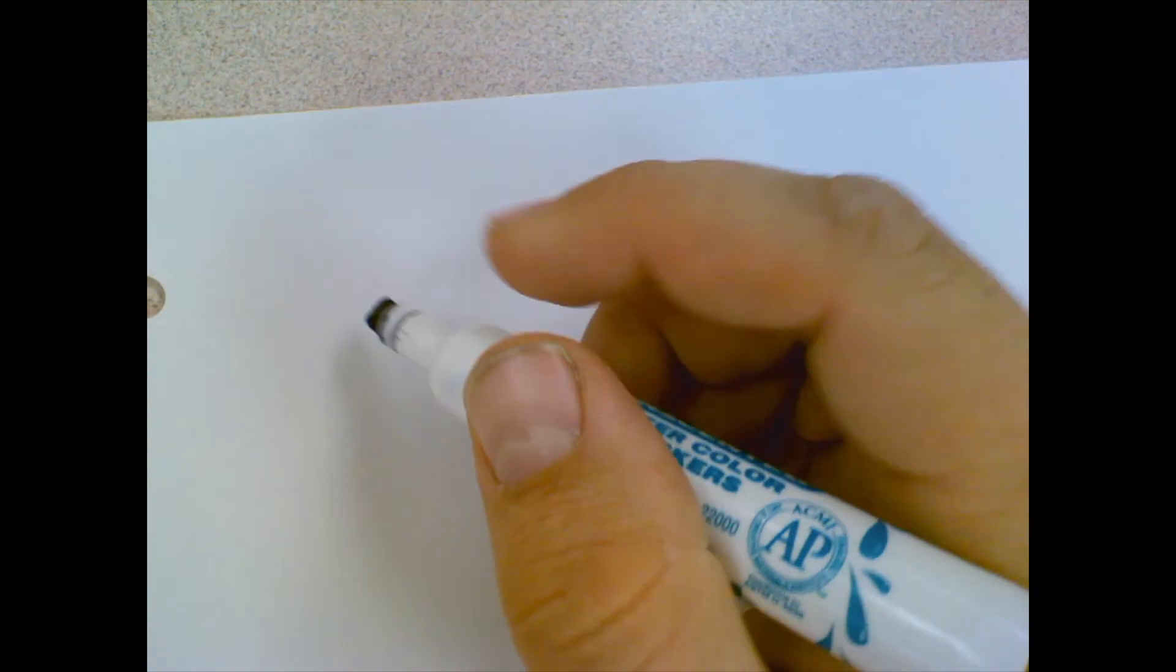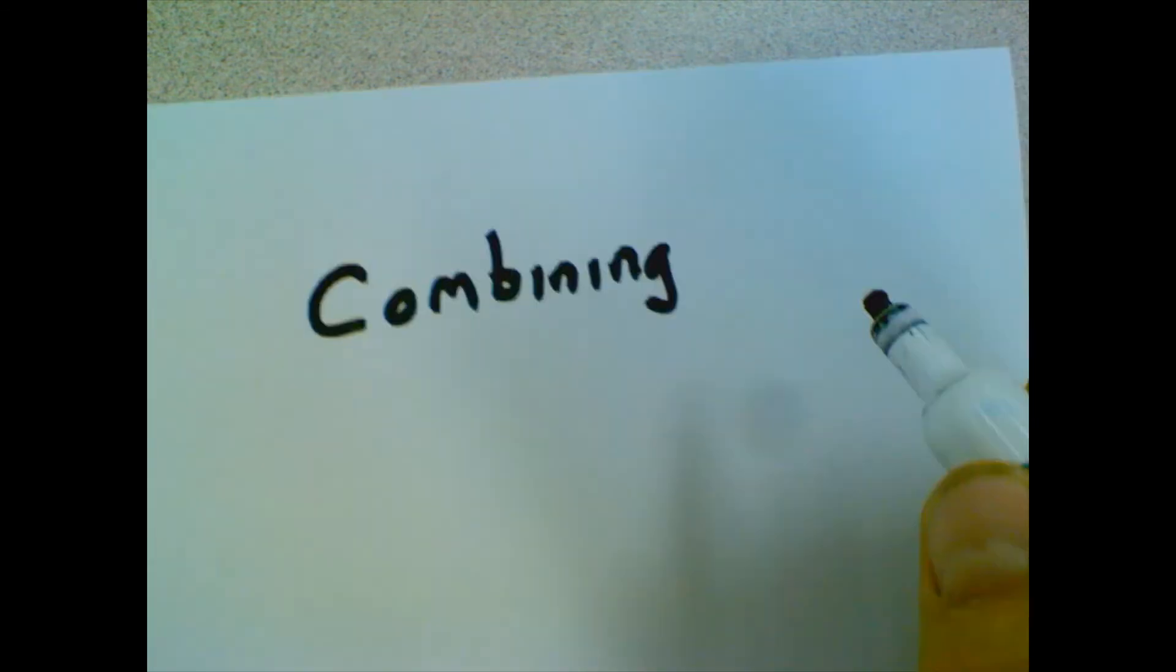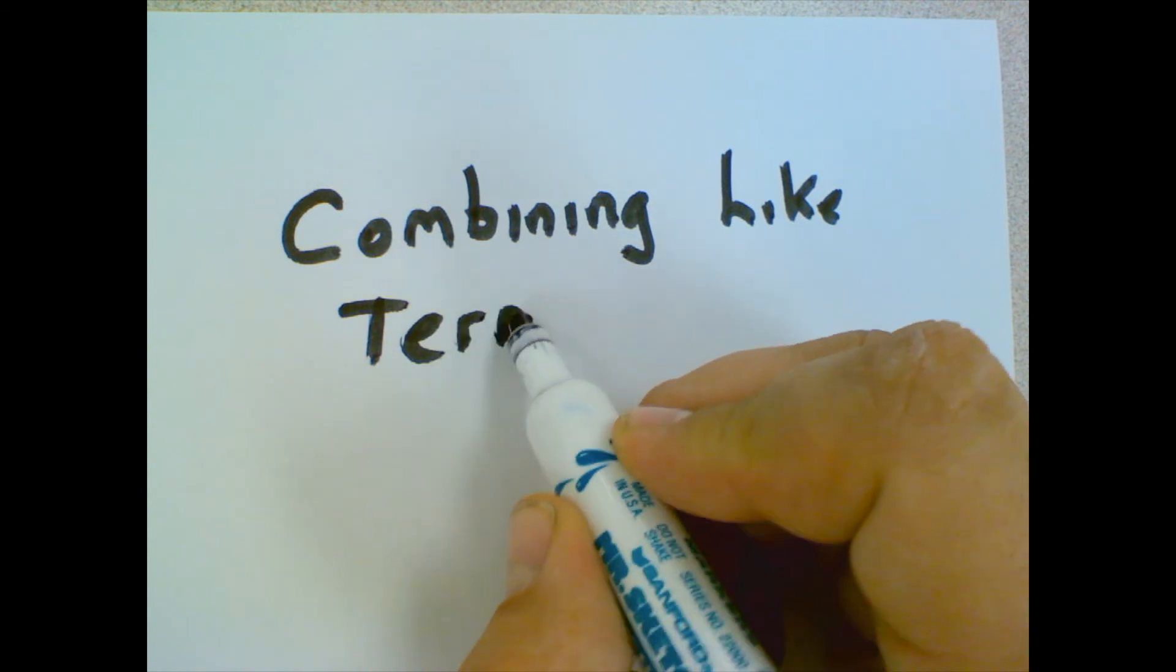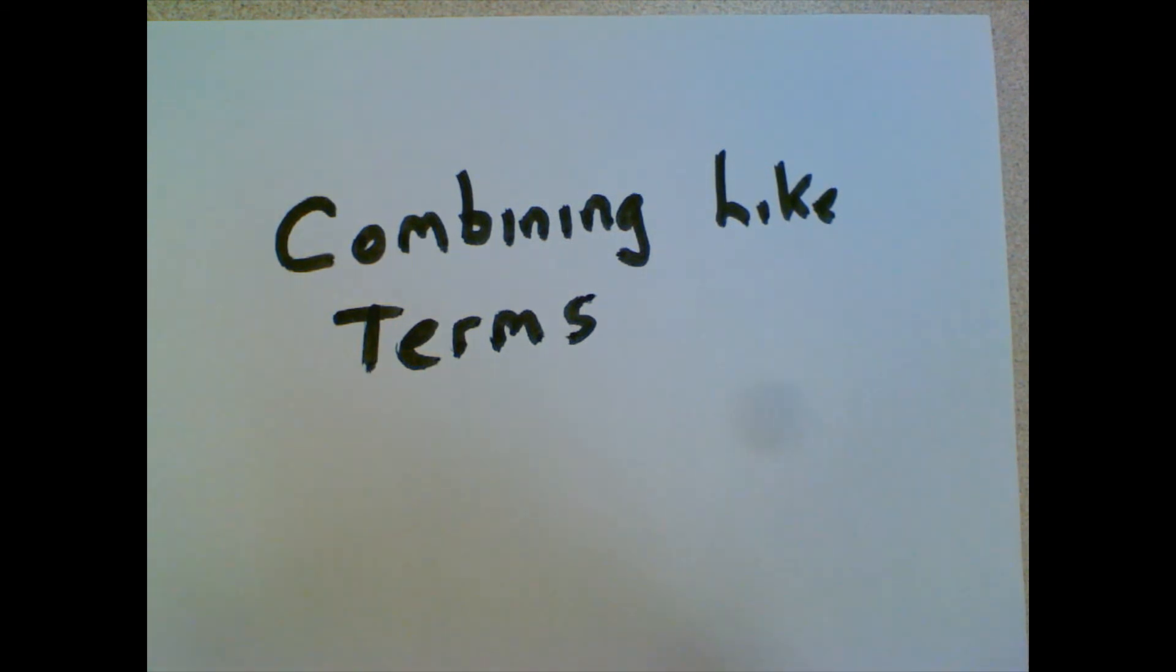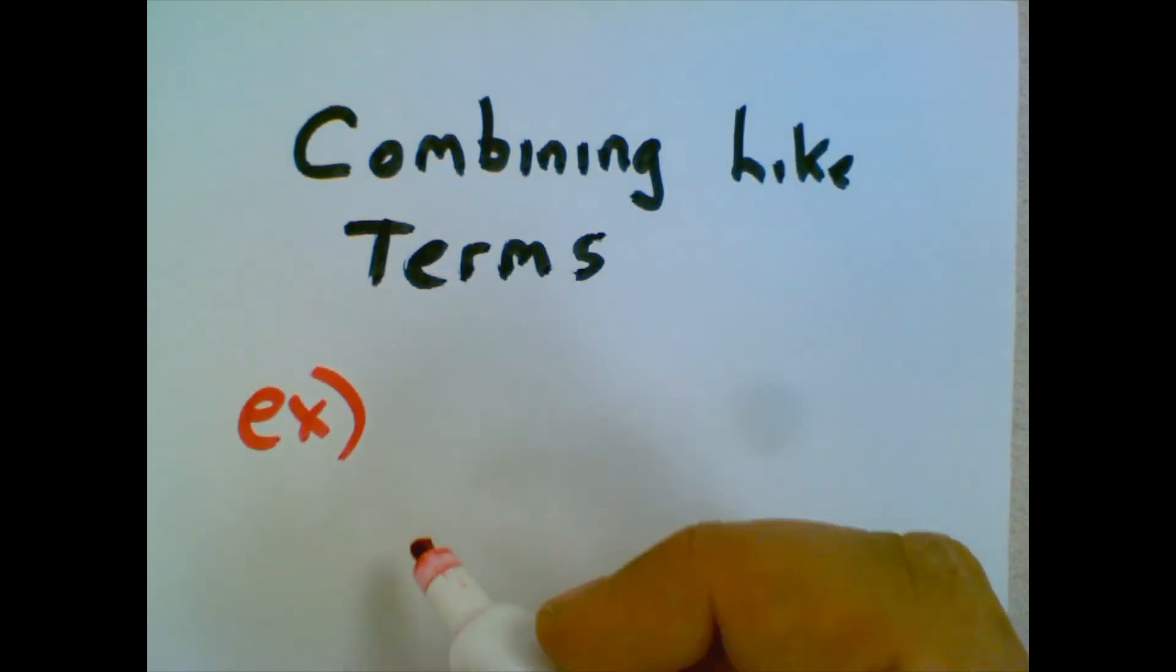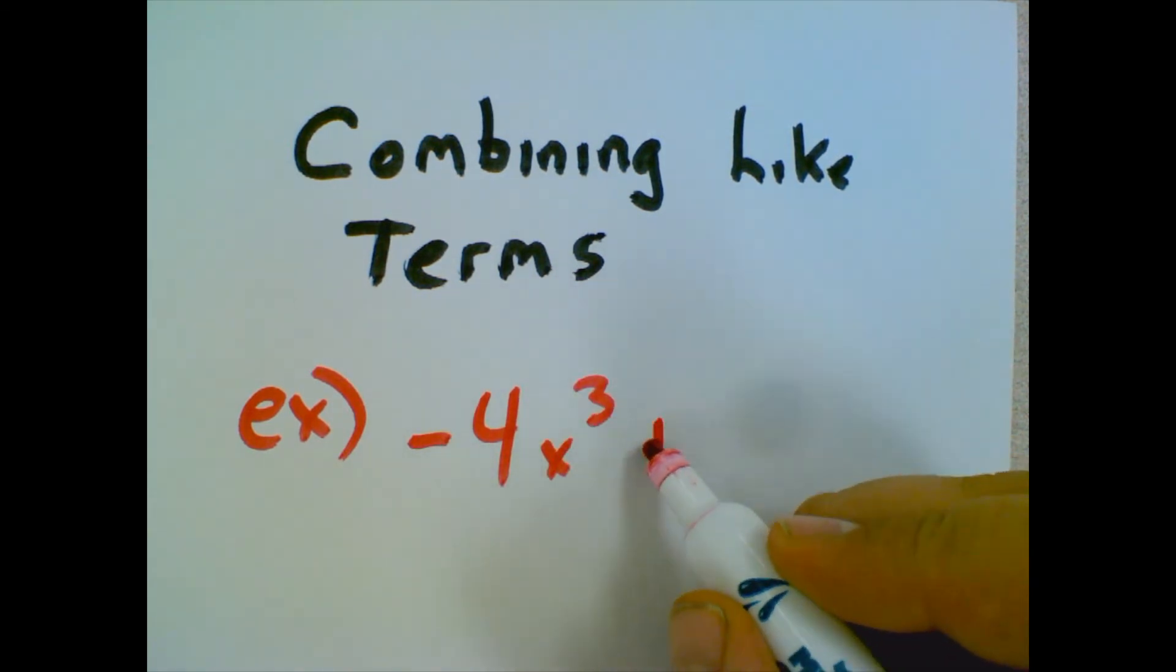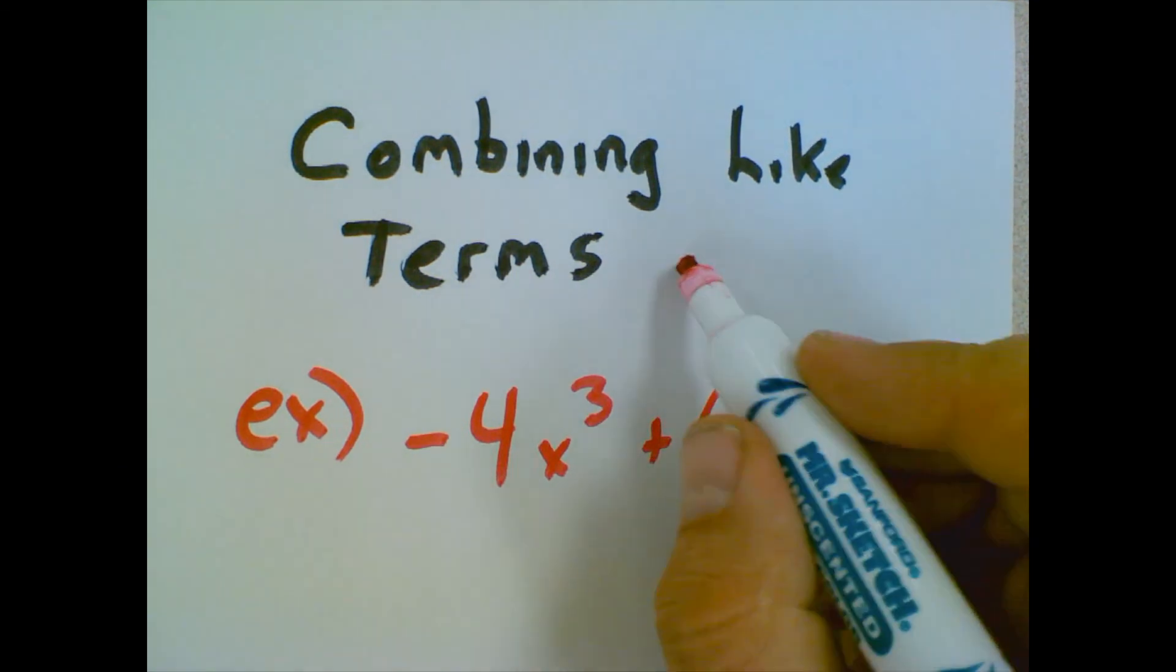All right, class, this is part two of the polynomial video. I'm going to talk about combining like terms first. So when we're talking about combining like terms, we're talking about adding or subtracting terms in a polynomial. Let me just give us some examples here. Let's say we have negative 4x cubed plus 6x cubed, and I'm asking you to simplify.